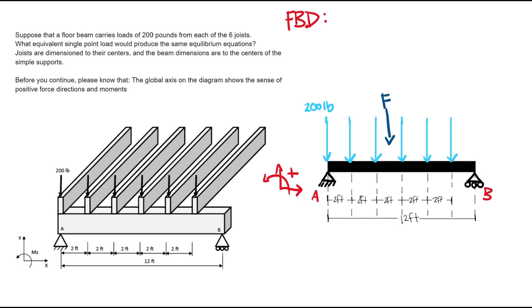Our force equivalent, which we'll label F, would act in the middle of that loading. Not in the middle of the whole beam, but in the middle of the actual loading itself that we are trying to create the equivalent force for. That distance would be from A, we're just going to label D.